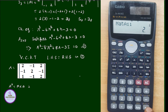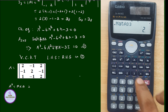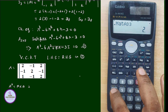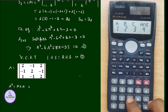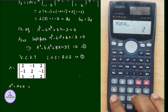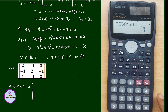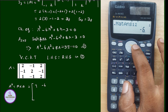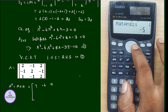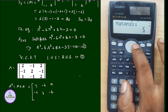Cross-verify the matrix values; if any are wrong, re-enter them. The given matrix is: first row 2, minus 1, 2; second row minus 1, 2, minus 1; third row 1, minus 1, 2. Now we calculate A squared using Shift, Mat, select matrix A, then press the square button and Enter. The result displayed: first row first element is 7, second element minus 6, third element minus 6. Third row first element is minus 5 and third element is 7.